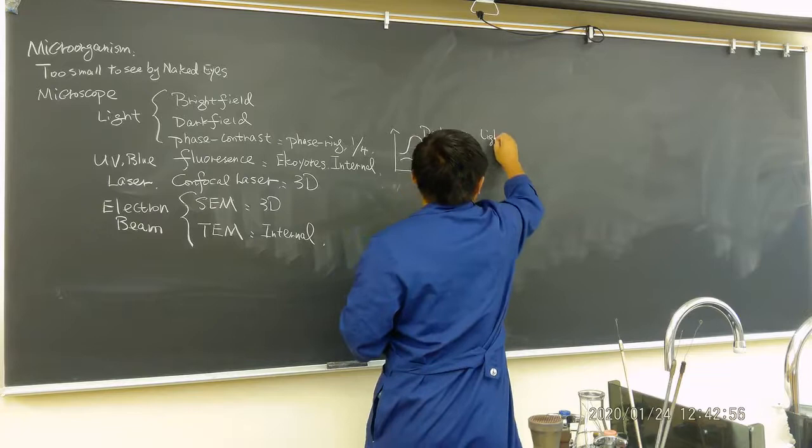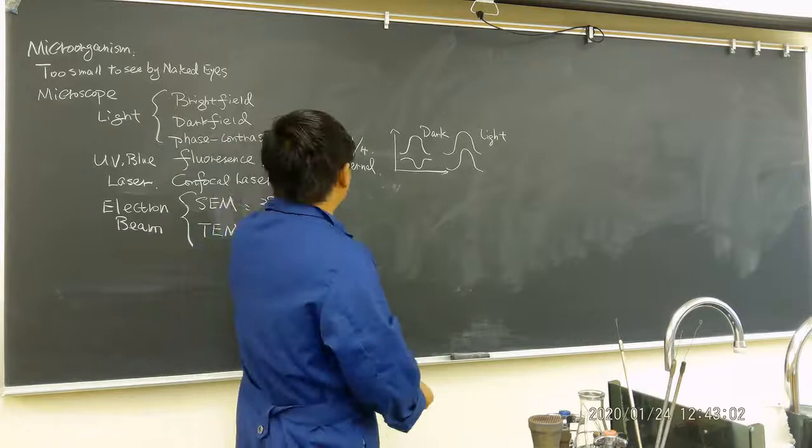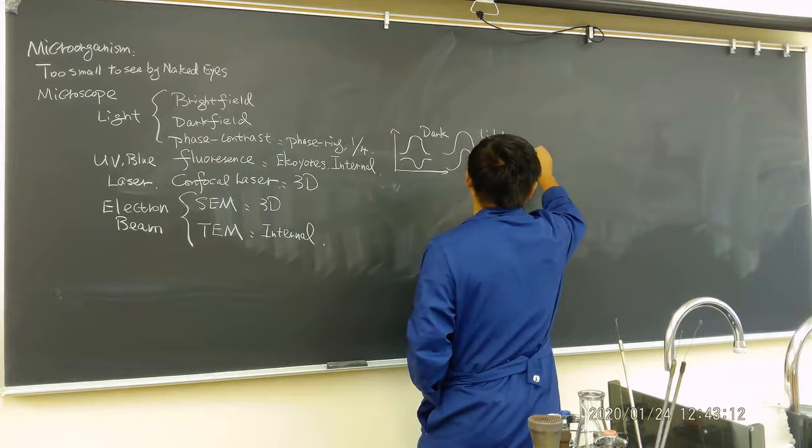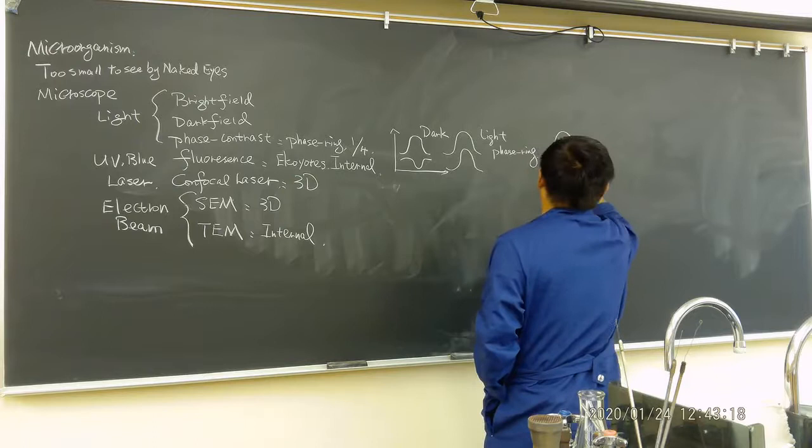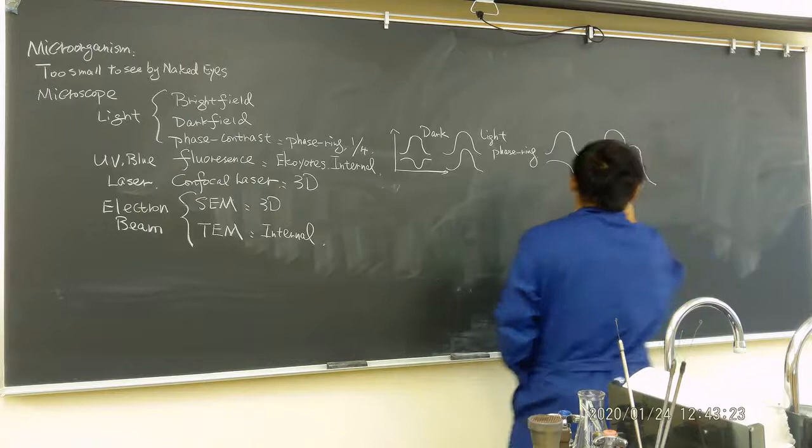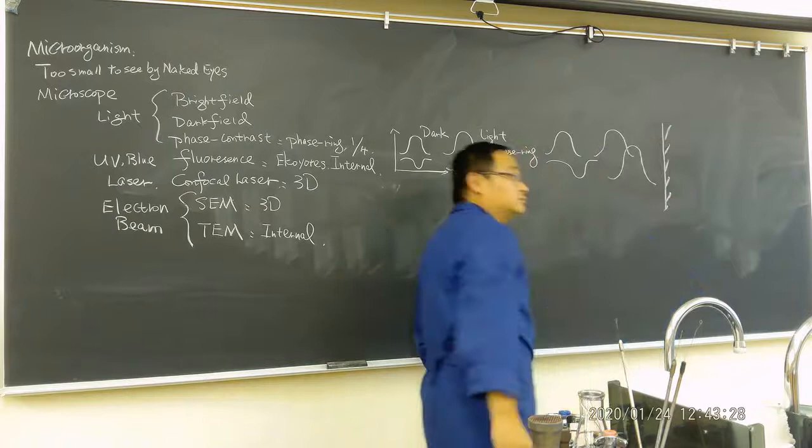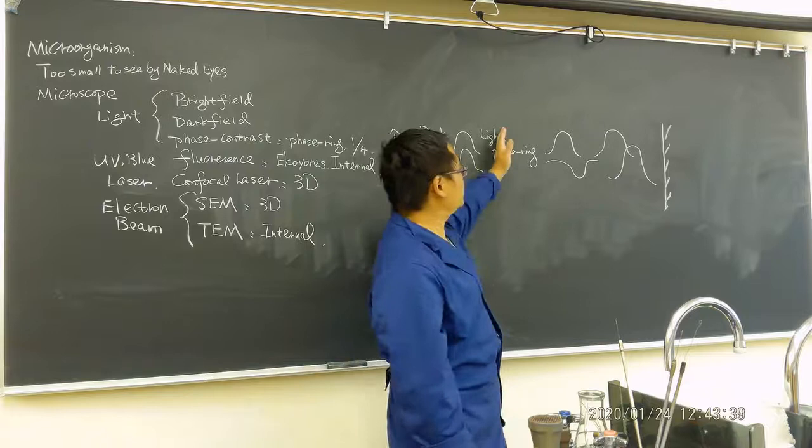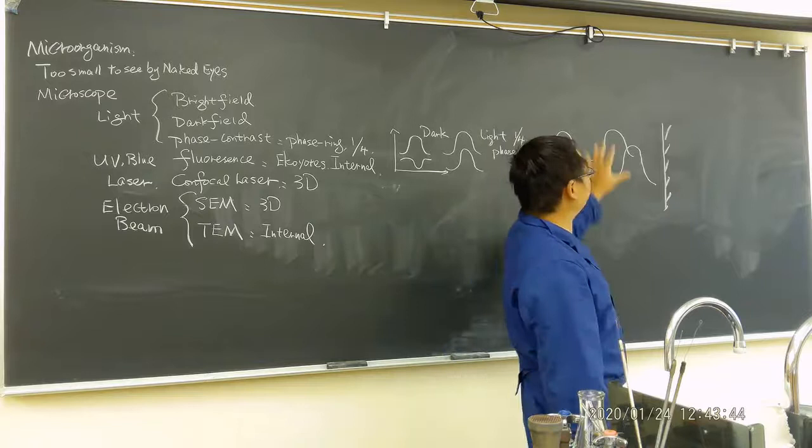Because of the phase ring, the wavelength speed is either one quarter fast or slow. So they change the wavelength. Therefore you will see the difference. So what happens is, I'm not sure you learned in the physics: if the peak and the bottom overlap, this will become dark. And if these two happen, this will be light. Now what happened? You have a phase ring. So the speed one quarter wavelength is changing. Then these overlap, there is something that shows up. That's called a phase contrast.